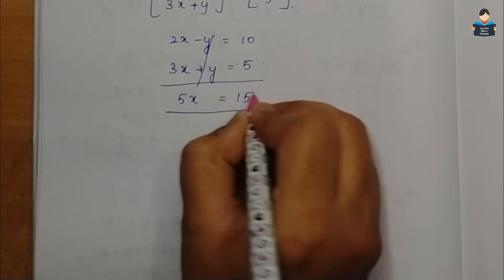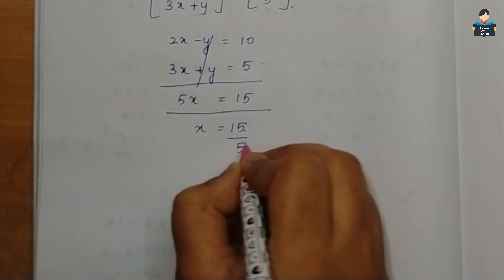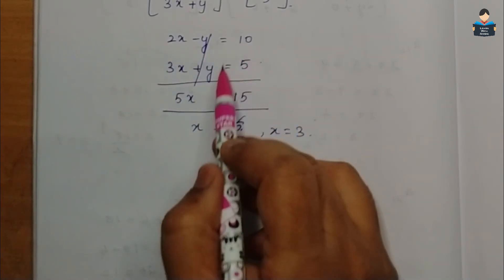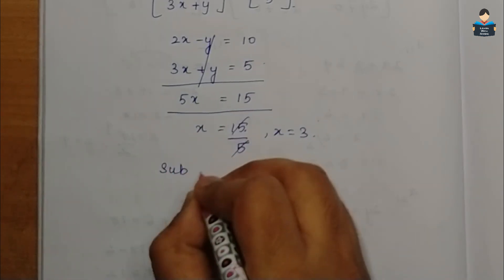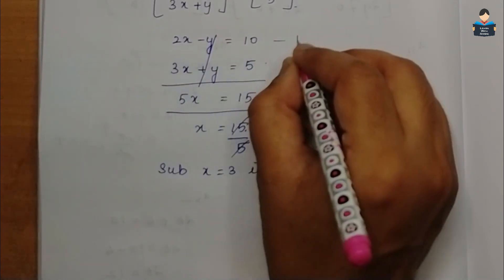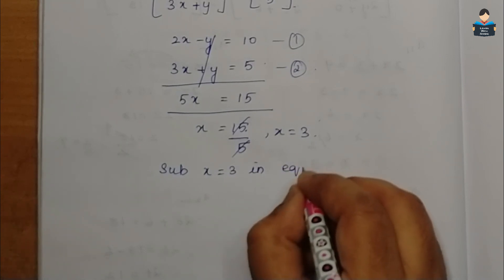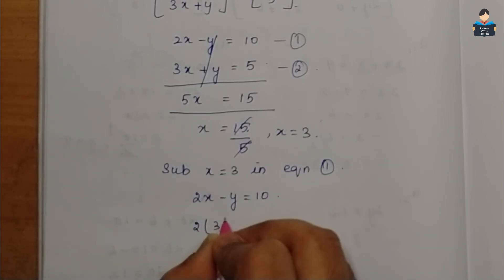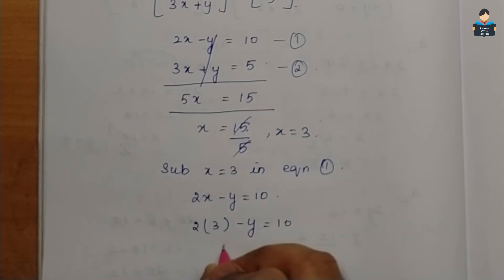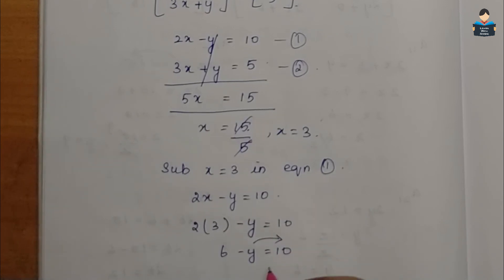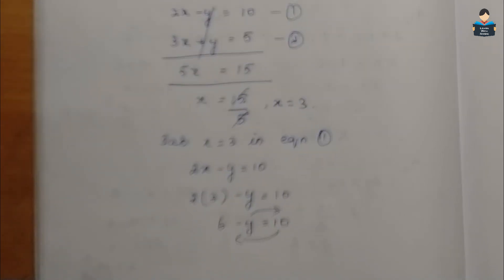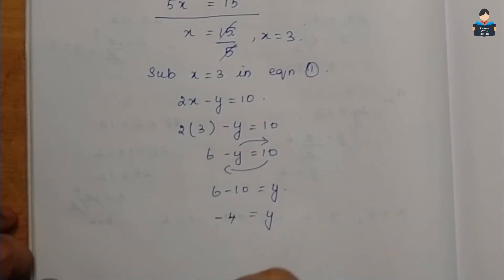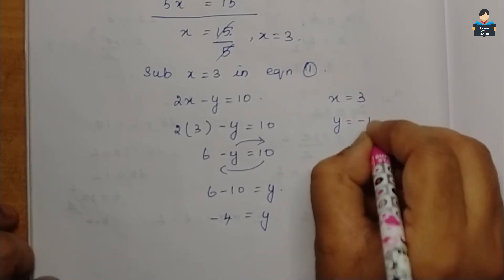Adding the two equations, we get 5x equal to 15, so x is equal to 15 by 5, which is 3. Substituting x equals 3 into equation 1: 2 into 3 minus y equals 10, so 6 minus y equals 10, giving y equal to minus 4.